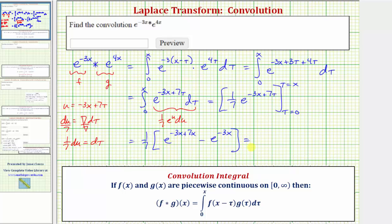So simplifying, we have one-seventh times the quantity. Here we'd have e to the 4x minus e to the negative 3x. This is the convolution of e to the negative 3x and e to the 4x. I hope you found this helpful.